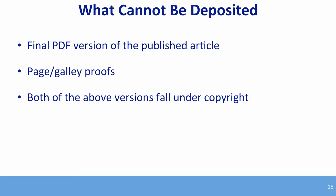What cannot be deposited? The final published version of the article — the one online with the journal name, volume, page numbers, and typeset images — cannot be deposited without permission from the managing editor. Page proofs and galley proofs also cannot be deposited. At that point, both the final version and the galley proofs are already under copyright and you do not have the ability to do anything with those versions.